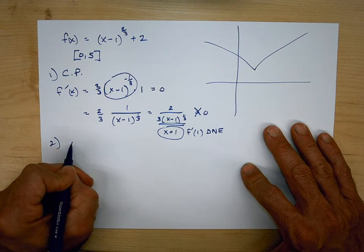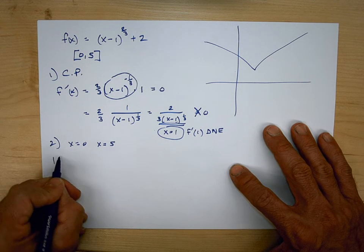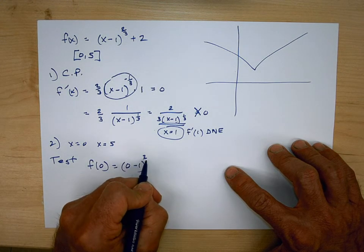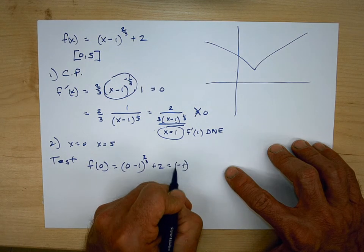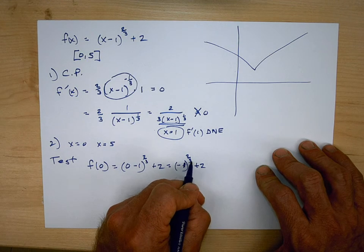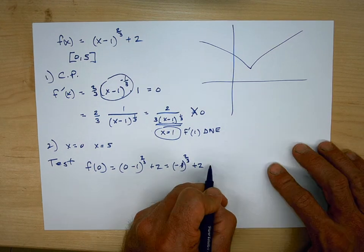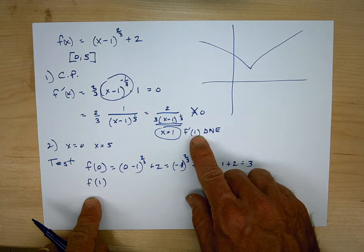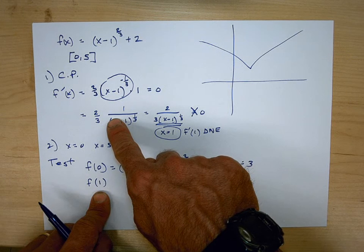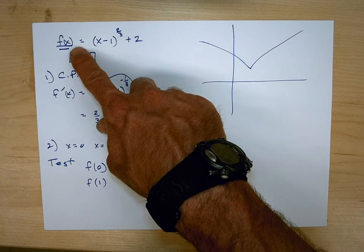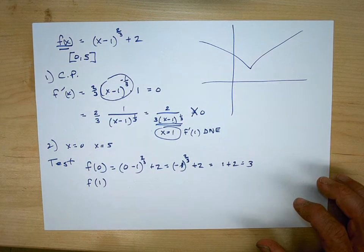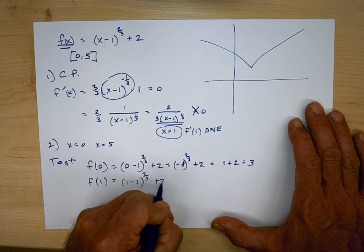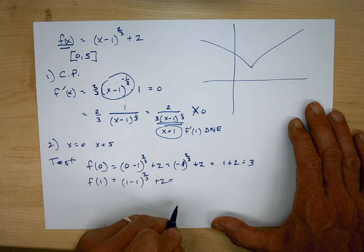We test all three points by plugging them into f. f of 0: (0 minus 1) to the 2/3 plus 2 equals (negative 1) to the 2/3 plus 2. That's the cube root of negative 1, which is negative 1, squared, which is 1. So that's 1 plus 2 equals 3. f of 1: notice I already know that f prime of 1 does not exist, but I'm putting 1 back into f, not f prime, because I want to know the extreme values of f. That gives (1 minus 1) to the 2/3 plus 2, which is 0 to the 2/3 plus 2, equals 2.